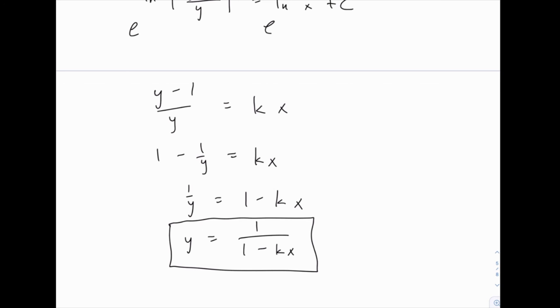But this one, even though it looks like one that we couldn't solve for y, if you remember your logarithm rules and you're comfortable with your algebra skills, then you can solve for y even if it didn't look like that could be done. So the answer to this one is that y equals 1 over (1 minus kx), and if we were given an initial condition we could find a specific value for k.